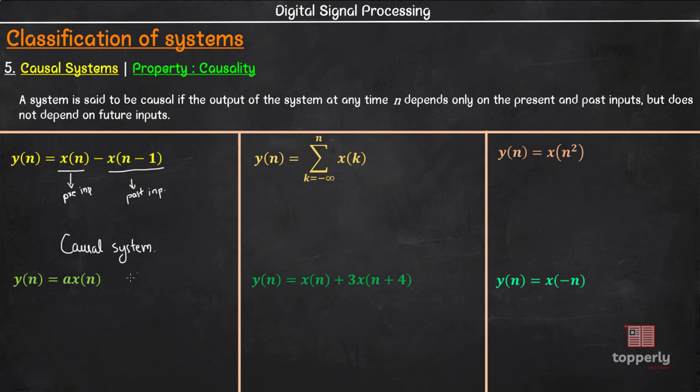Coming to the system y of n equal to a into x of n, here also the output depends only on the present value of input x of n. No future inputs are present in the system equation. Therefore, this is also a causal system.